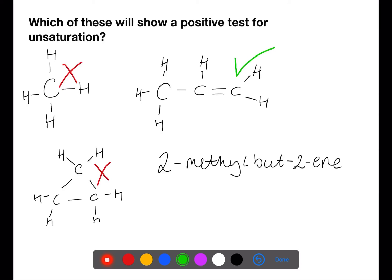2-methyl-but-2-ene is an alkene and therefore will show a positive result with bromine water.